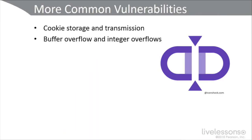One example is a packet holding a long string of NOP (no operation) instructions followed by a command — called a NOP slide — which forces the processor to locate where a command can actually be executed. This can be mitigated with proper input validation and regular vendor patches and updates. The primary countermeasures to these types of attacks are input validation and patching.